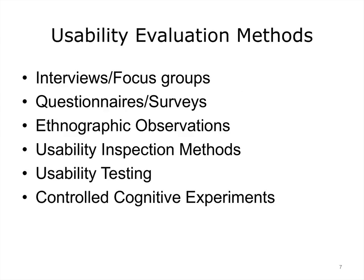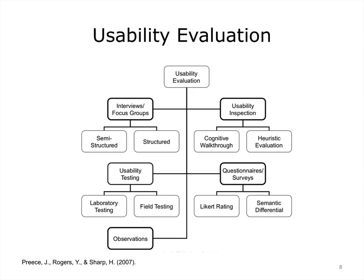We will review a few different usability evaluation methods. Ethnographic observations refer to observing users in the real world as they perform computing tasks. Controlled cognitive experiments may be employed to investigate how a given system impacts or transforms human performance; these are conducted in laboratory settings. It is convenient to think of five superordinate classes or types of methods, which can be further subdivided into a range of methods. We are going to talk about the first four classes: interviews, questionnaires, usability inspection, and usability testing.